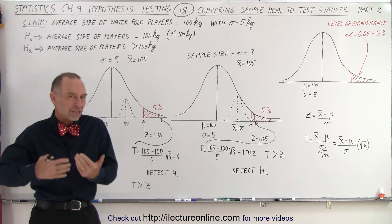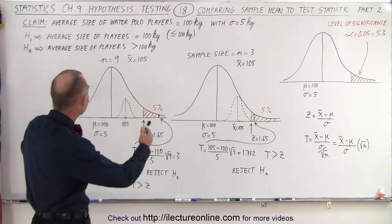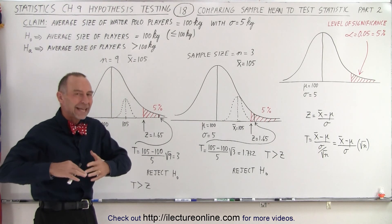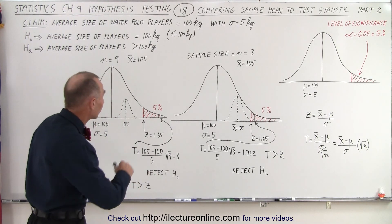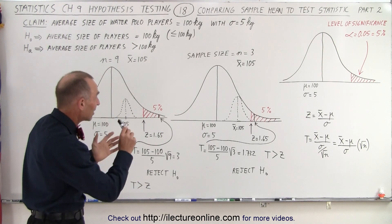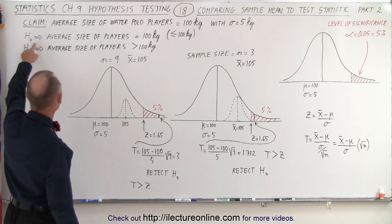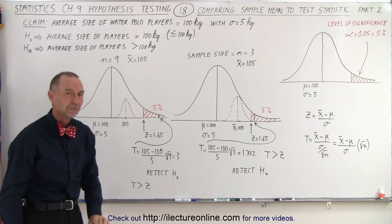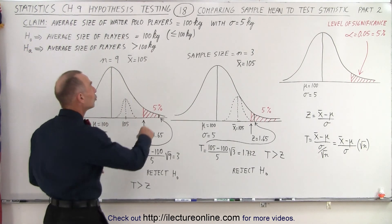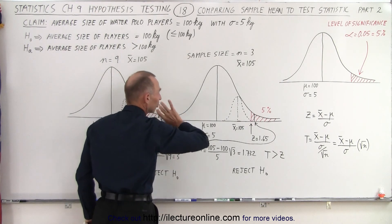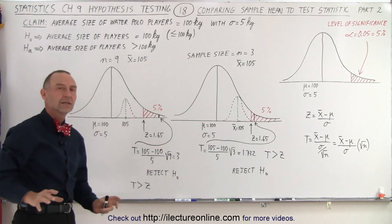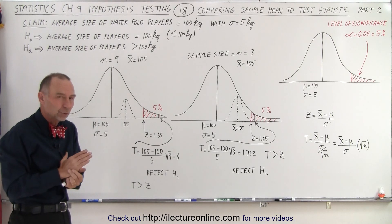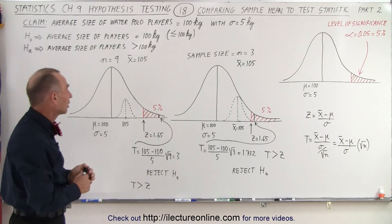So we're going to continue that investigation. We're dealing with water polo players. We're making the claim that the average size of water polo players is 100 kilograms with a standard deviation of 5 kilograms. Our null hypothesis says the average size of players equals 100 kilograms, and the alternate hypothesis is that the average size of water polo players was greater than 100 kilograms.